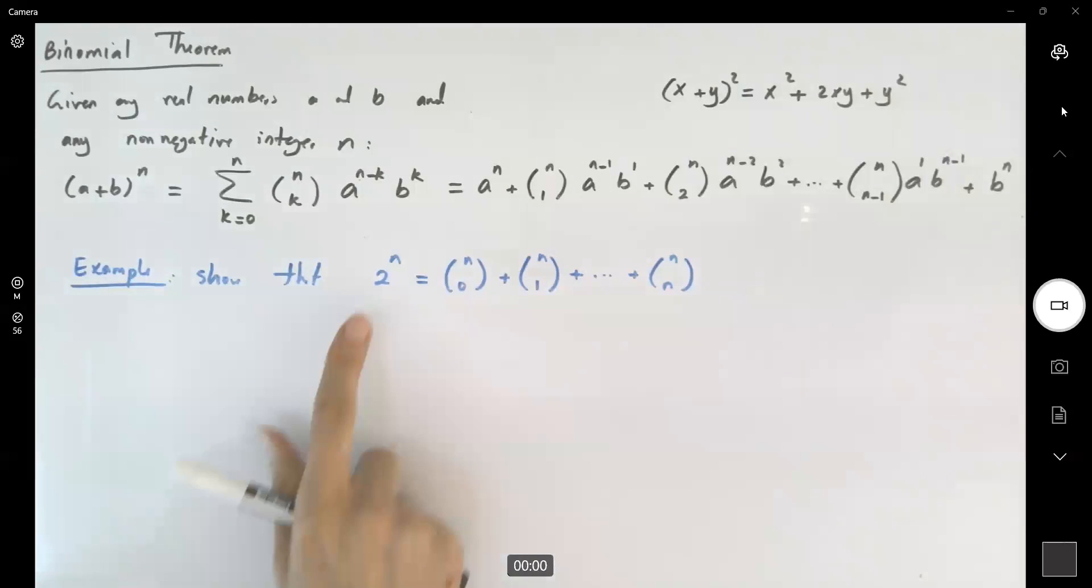So we want to use the binomial theorem. We're going to show that 2 to power n can be written as the sum of these combinations. But how? Note that 2 is 1 plus 1. So 2 to power n can be written as 1 plus 1 to power n.